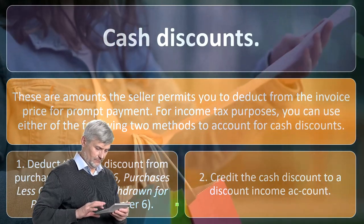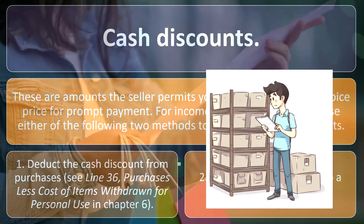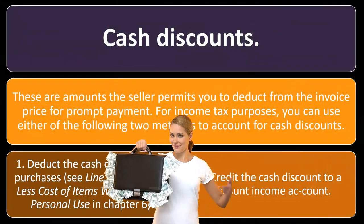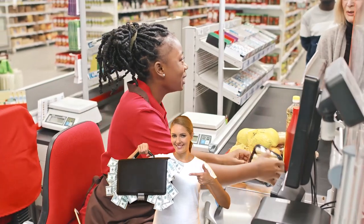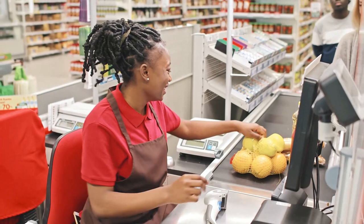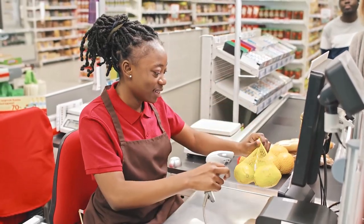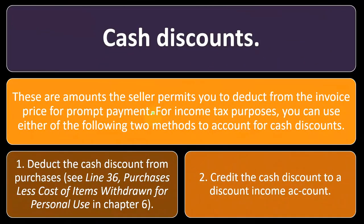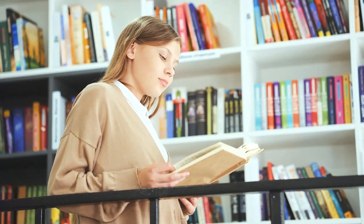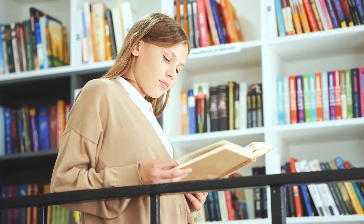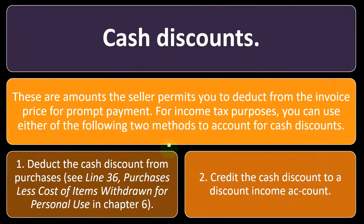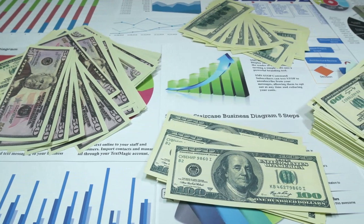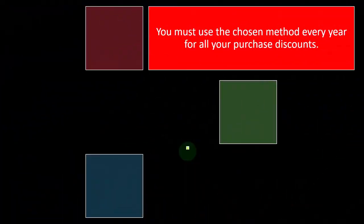For example, imagine you're buying inventory and you have the option of a discount if you pay within 10 days. You could account for the discount at the point of purchase and put the inventory on the books at the lower, discounted price. Alternatively, you could put it on the books at the higher price without the discount, and if you do pay within the discount period, you credit the cash discount to a discount income account.